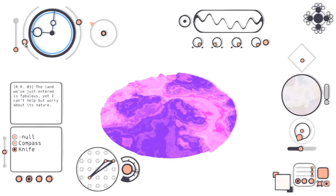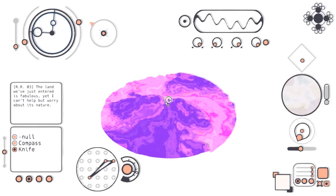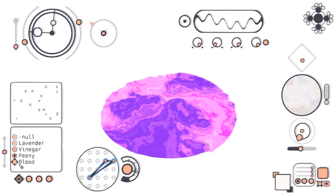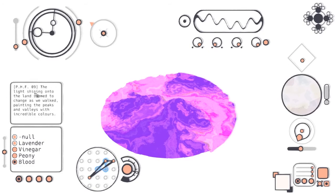And then this needs to be zoomed to there. And then, boom! What have we got? We've got Blood. Blood says, The light shining onto the land seemed to change as we walked, painting the peaks and valleys with incredible colors. This thing is going bananas over here.